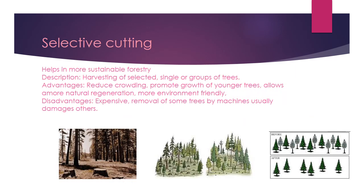Now we'll discuss selective cutting, which is basically a solution to deforestation and also helpful to conserve soil by improving healthy forestry. Selective cutting helps in more sustainable forestry — it is the harvesting of selected single trees or groups of trees. Its advantages include reducing crowding of trees, promoting growth of younger trees, allowing more natural regeneration, and being more environment friendly. Some disadvantages are that it is expensive for countries like Pakistan, as investment on a larger scale is difficult, and removal of some trees by machine usually damages others.